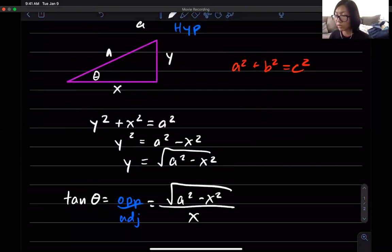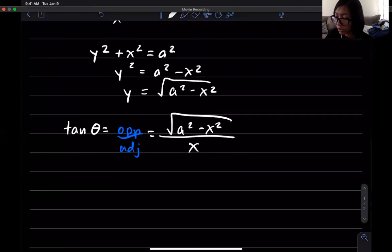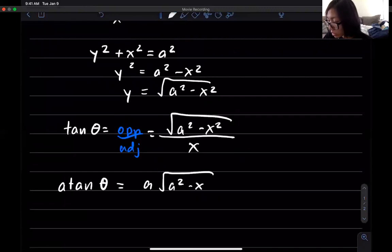Right and so let's see we had a times tangent so a tangent theta in terms of x is going to be a square root of a squared minus x squared all of that over x and so that's how we can go back and forth basically just going to be using the Pythagorean theorem and drawing a bunch of triangles.